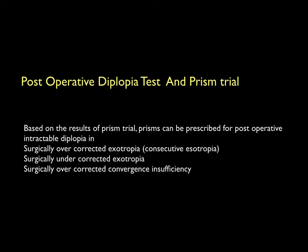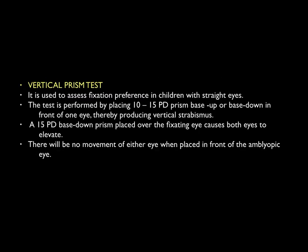Sometimes readings need to be taken for distance as well as near. The vertical prism test is used to confirm the fixation preference in nonverbal or uncooperative children with amblyopia. A 15 prism diopter base-down prism is placed over the fixating eye, which causes both eyes to elevate, whereas there will be no movement of either eye when it is placed in front of the amblyopic eye.